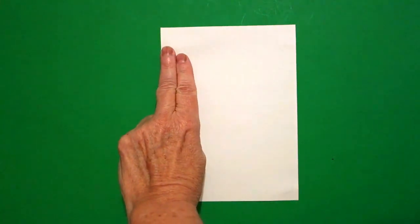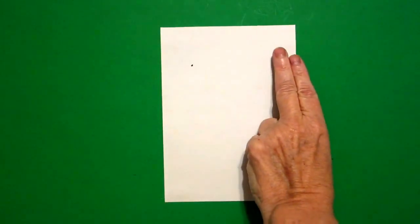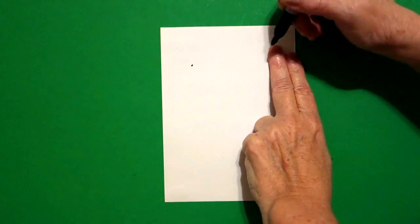I take two fingers up at the top, on the left, and put a dot. I come right across on the right, two fingers, and put a dot.